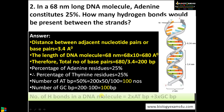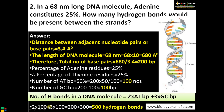Now substituting the values: number of hydrogen bonds = 2 × 100 + 3 × 100 = 200 + 300 = 500 hydrogen bonds. In this question we needed to find the number of base pairs from the given length of the DNA molecule. The key point is that the distance between adjacent base pairs is 3.4 angstroms or 0.34 nanometers.